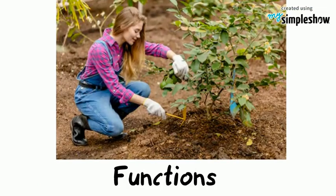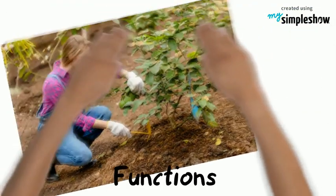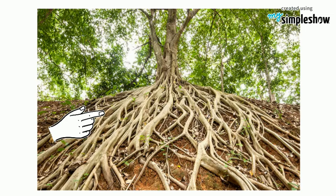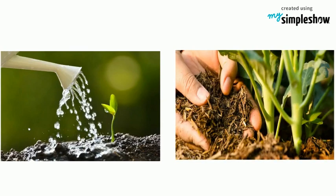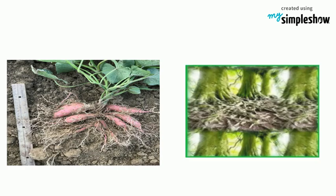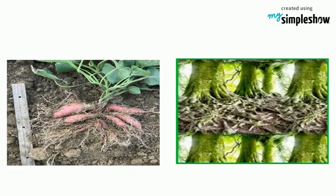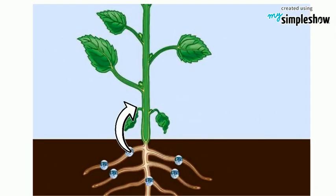Here are the functions of the roots. They anchor and support the plant to the soil. They absorb water, nutrients, and minerals for the plant. They store food or water, and transport the minerals to the stem.